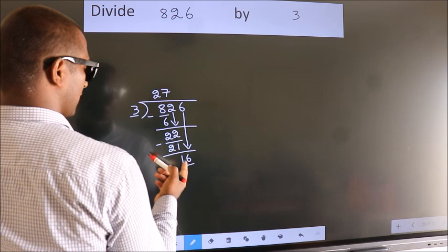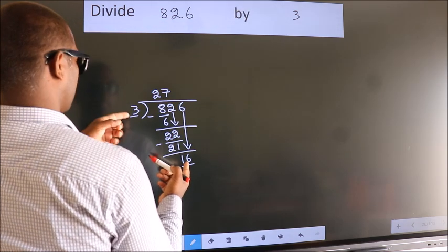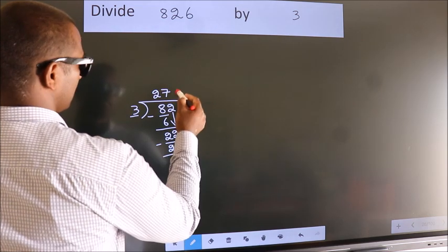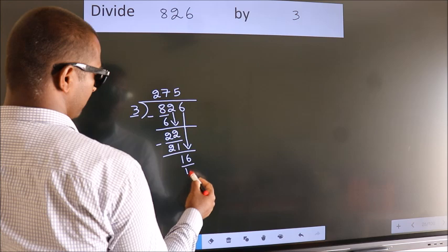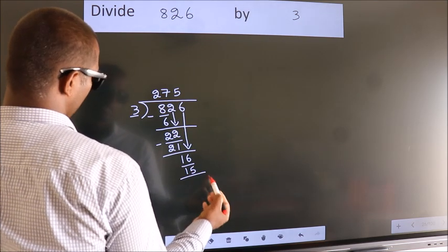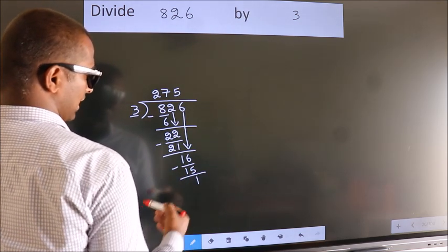So, 16. A number close to 16 in the 3 table is 3 times 5 equals 15. Now we subtract. We get 1.